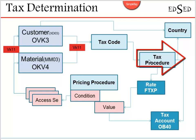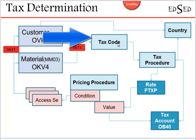The tax code maintains the tax percentage. The tax procedure contains all the tax conditions which are triggered as part of the entire tax determination process.